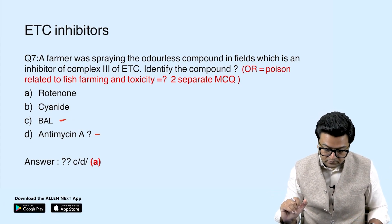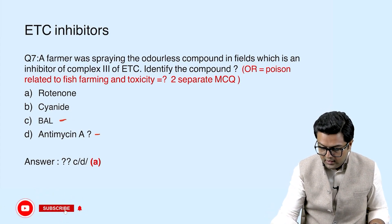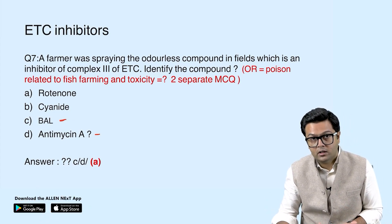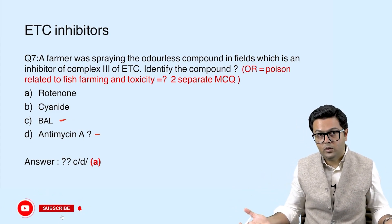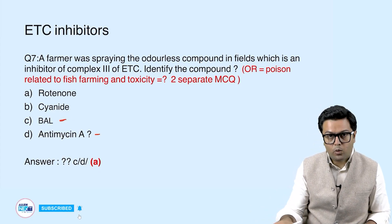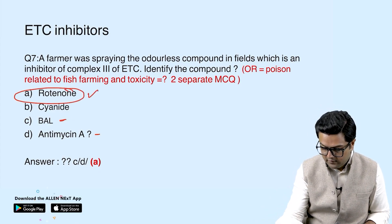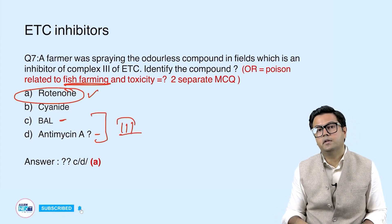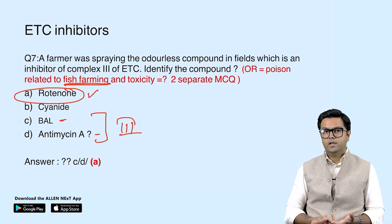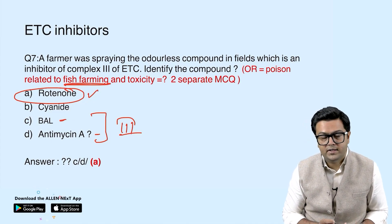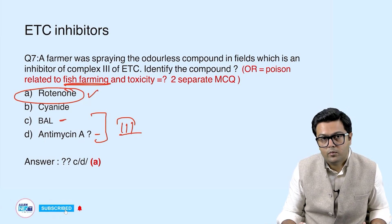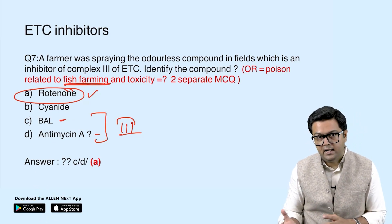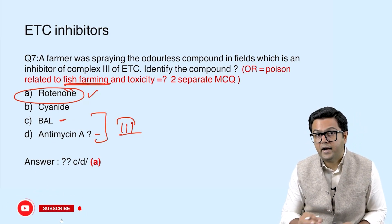If it is a fish farming-related question, the answer is rotenone. The ETC inhibitors by complex are: Complex 1 — rotenone; Complex 2 — malonate and carboxin; Complex 3 — antimycin A and BAL; Complex 4 — cyanide, carbon monoxide, H2S, and azide. Also, ATP/ADP translocase inhibitor is atractyloside.